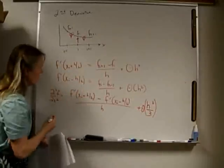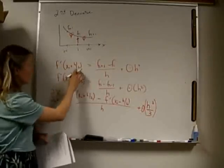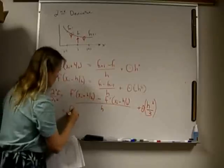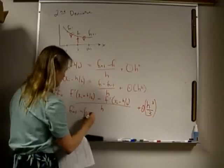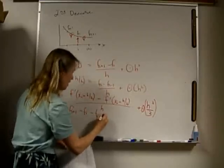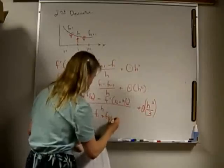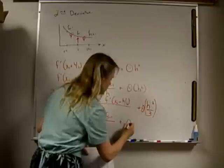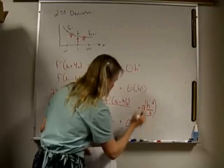Now let's actually put our values in here. So let's take this one minus this one and see what our function looks like. So it's f i plus 1 minus f i minus f i plus f i minus 1 divided by h plus error on the order of h cubed over 3.